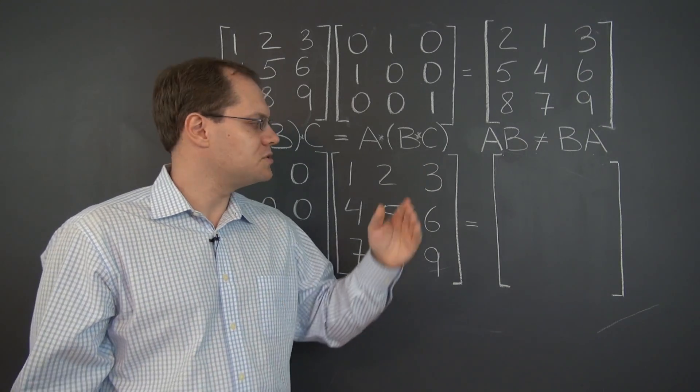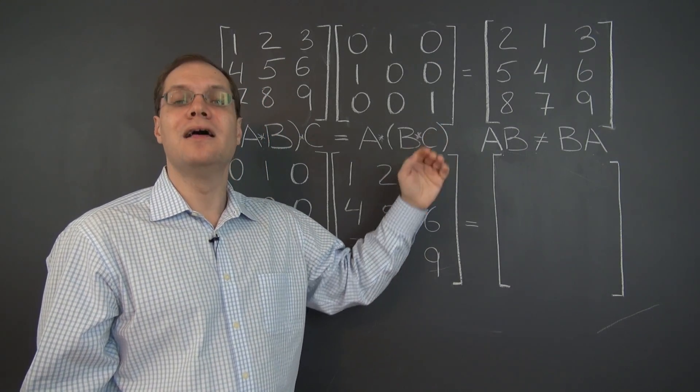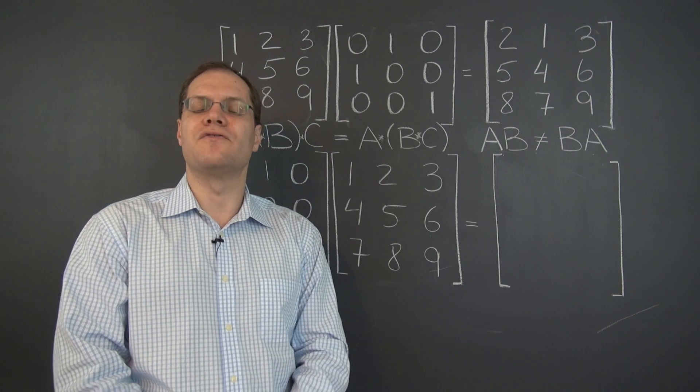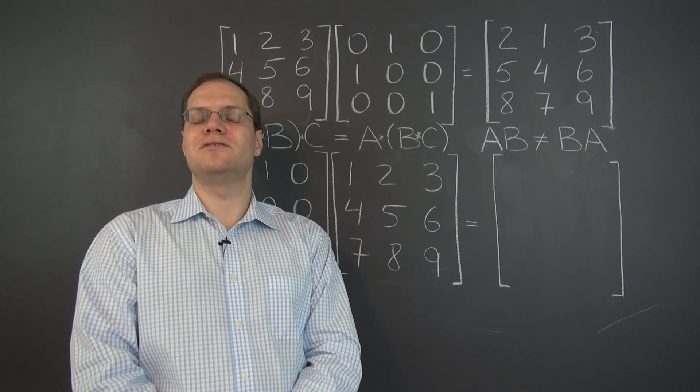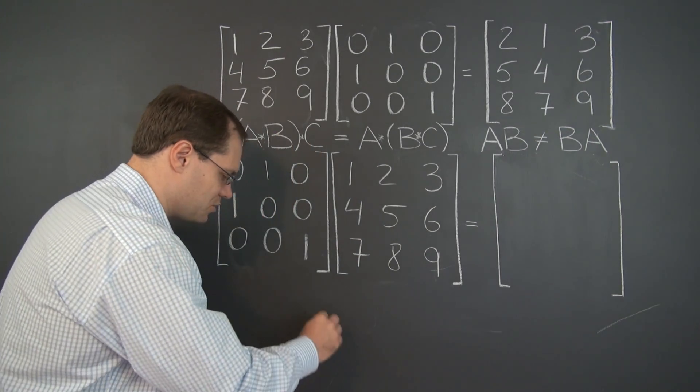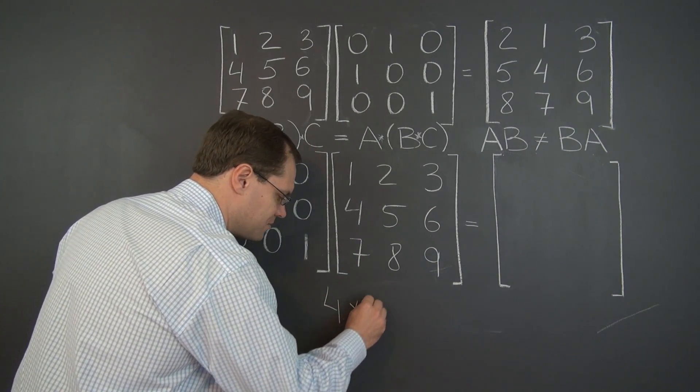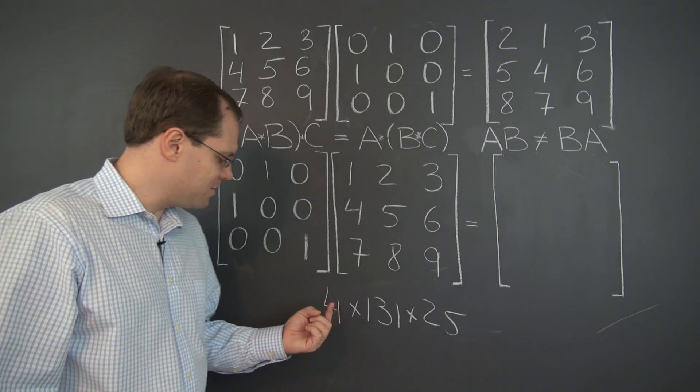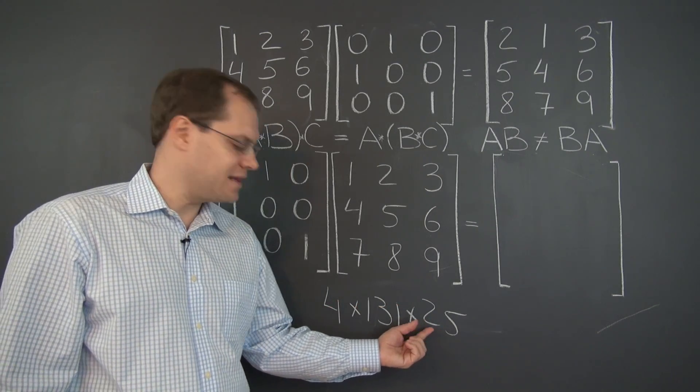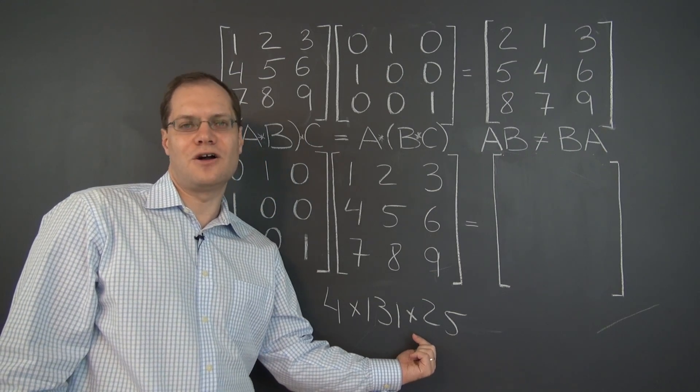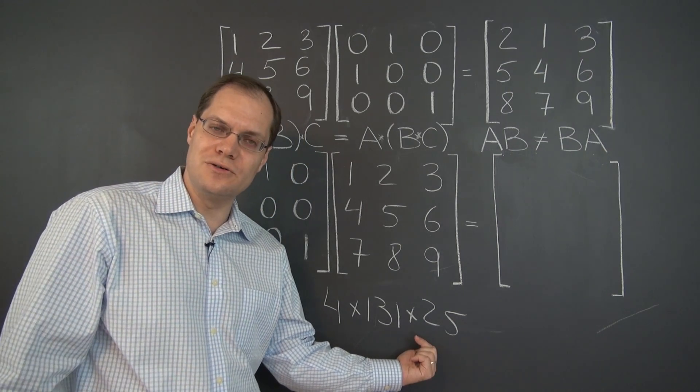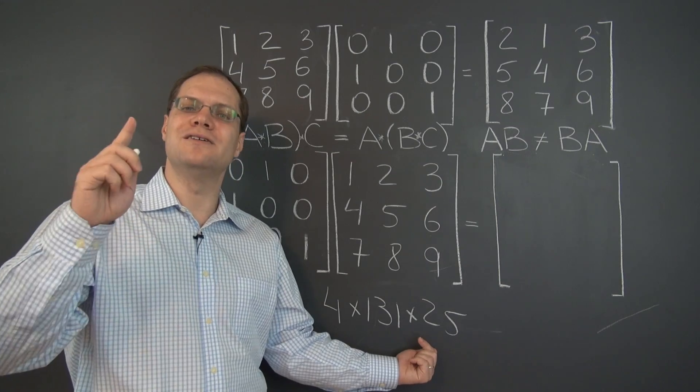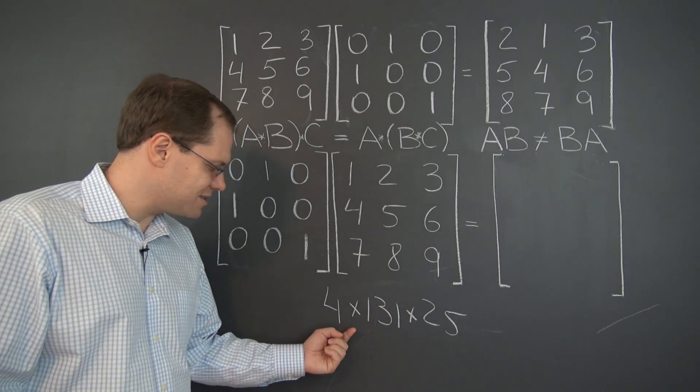That's one crucial difference between matrix multiplication and multiplication of ordinary numbers, where the order doesn't matter, where 14 times 25 equals 25 times 14. If you had to do a complicated product, such as 4 times 131 times 25, it would behoove you to multiply 4 by 25 first. That requires switching the order of multiplicative terms, which you can do because the order doesn't matter, because the product of ordinary numbers is commutative.